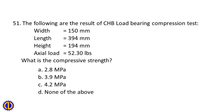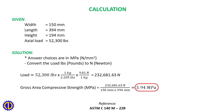Question 51: The following are the results of a CHB load-bearing compression test — Width = 150 mm, Length = 394 mm, Height = 194 mm, Axial load = 52,300 pounds. What is the compressive strength? A. 2.8 MPa, B. 3.9 MPa, C. 4.2 MPa, D. None of the above. Answer: B. 3.9 MPa.